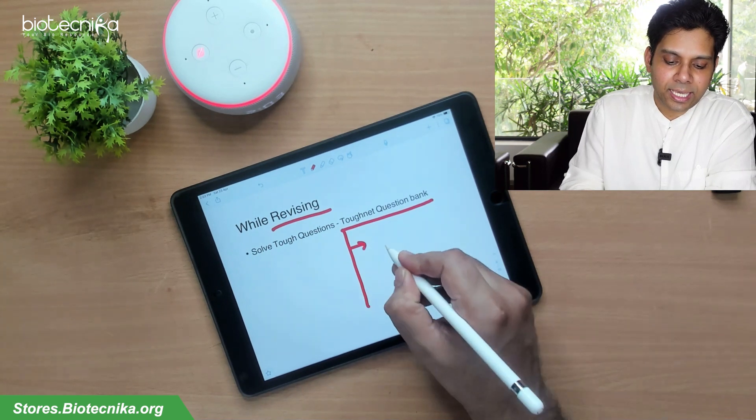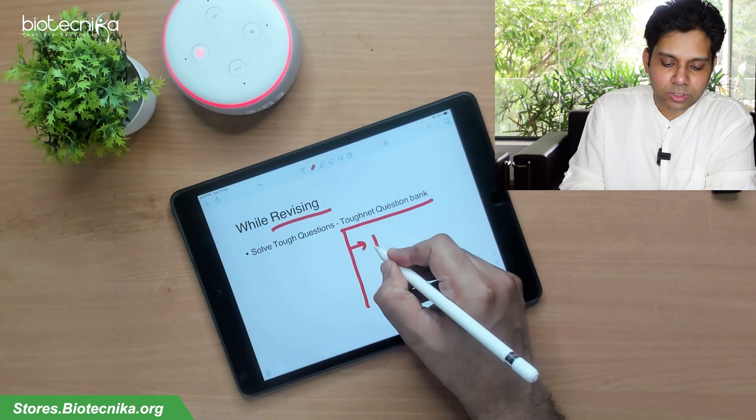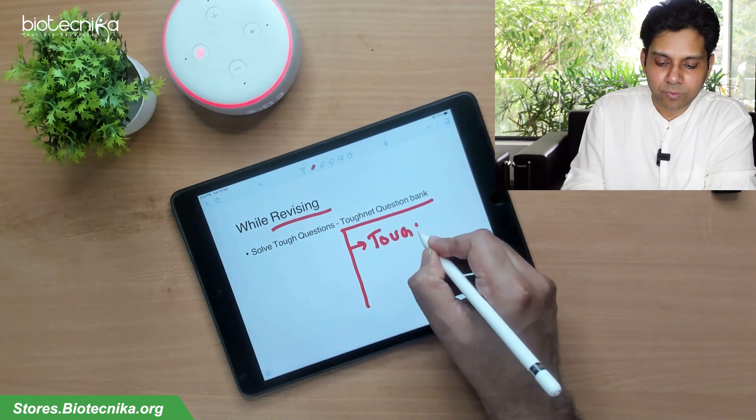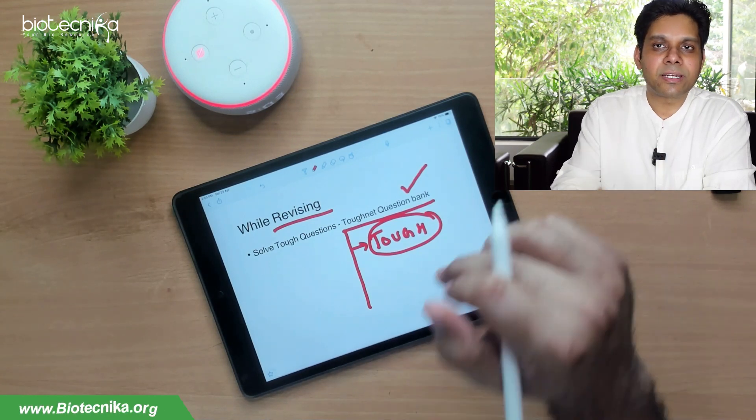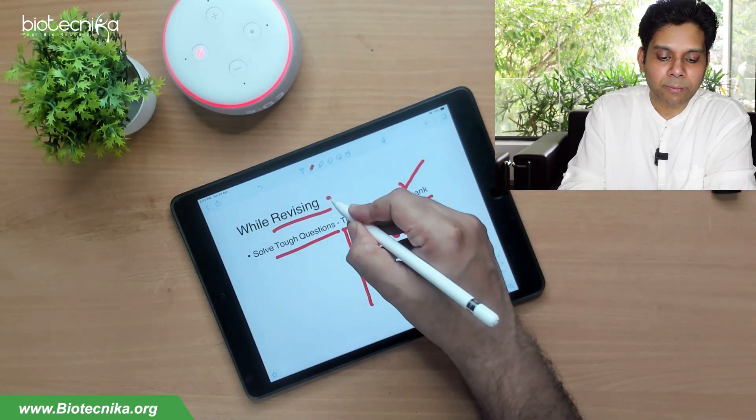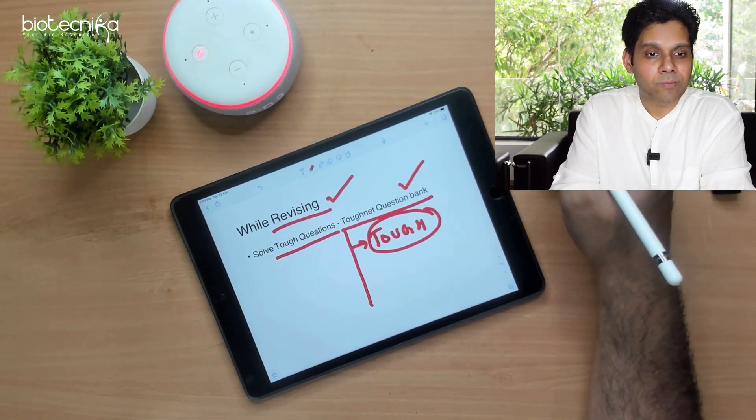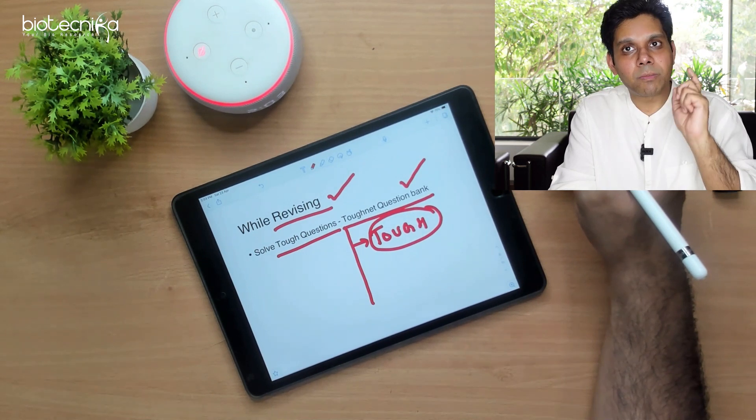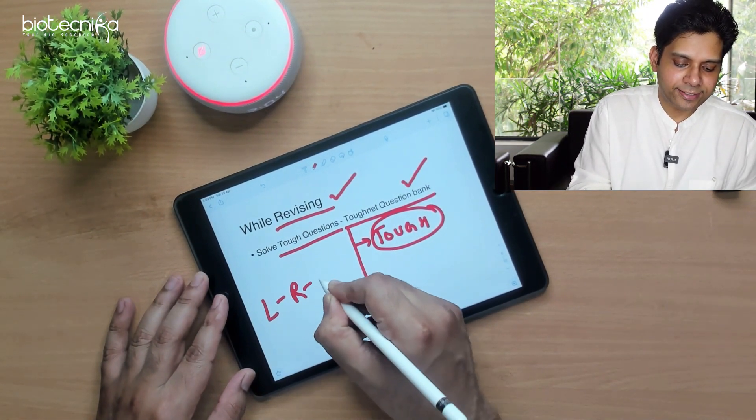What is it? CSIR's last 10 years question paper, the most tough questions are in the book. The link is given in the description. You can check it out. You have to solve the tough questions. Revision is such a process in which you have to evaluate.